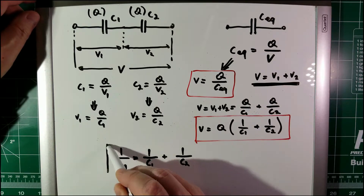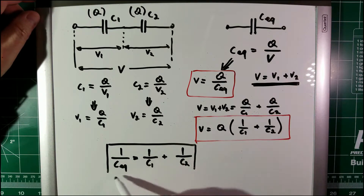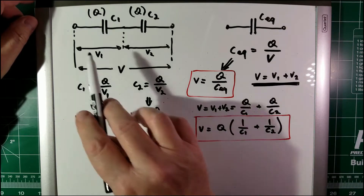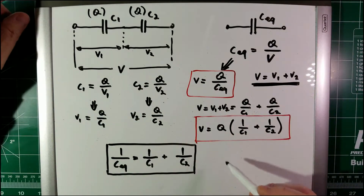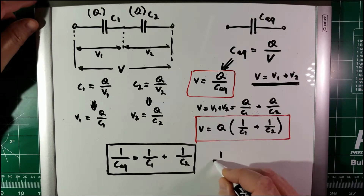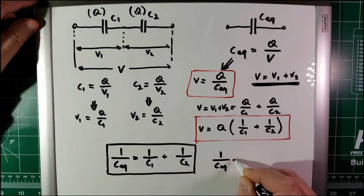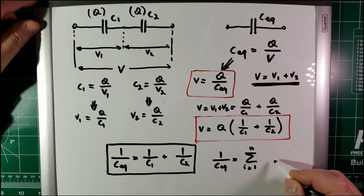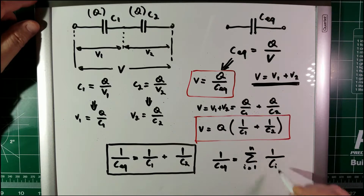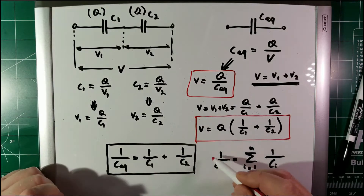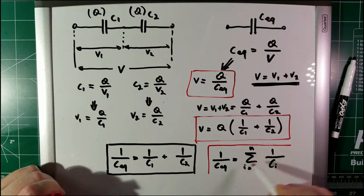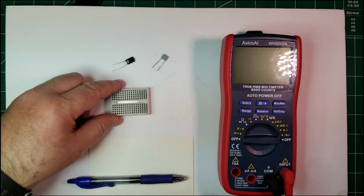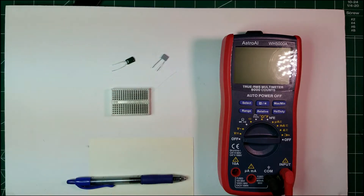Extending the concept to N capacitors, we can rewrite this as: 1 over C_equivalent equals the summation for i equals 1 to N of 1 over C_i. This is the general formula for capacitors in series. Let's now try to verify the case of capacitors in series.